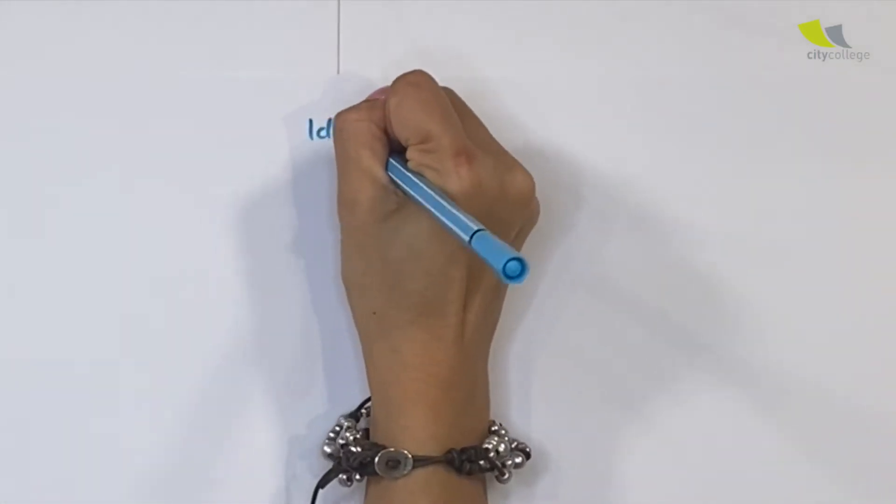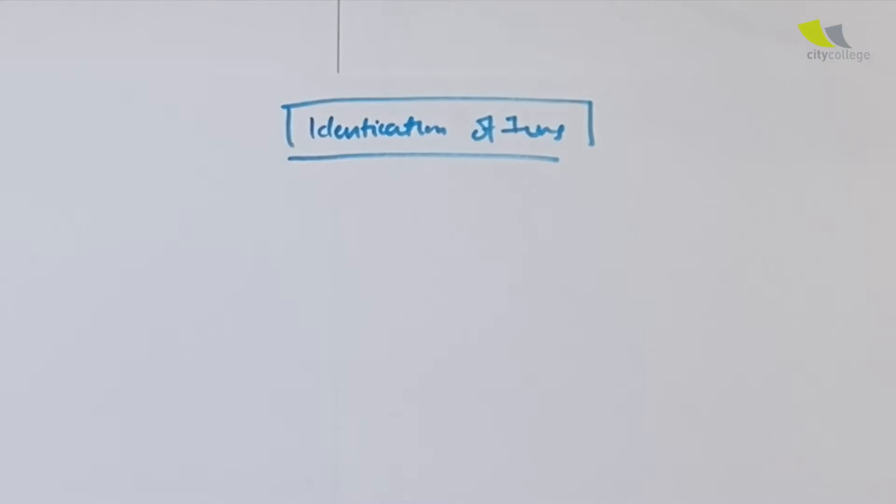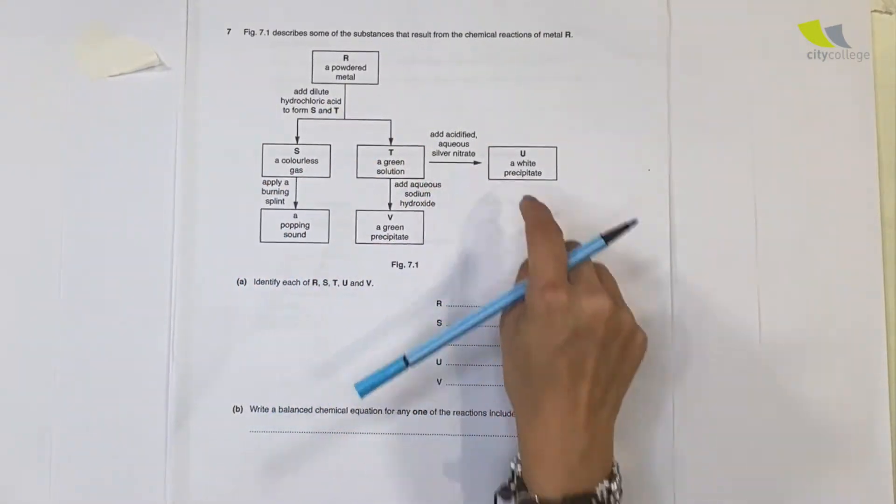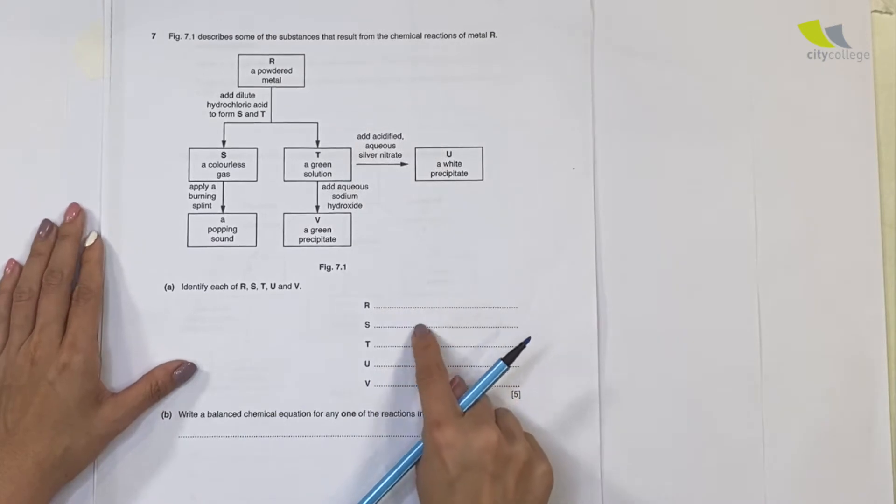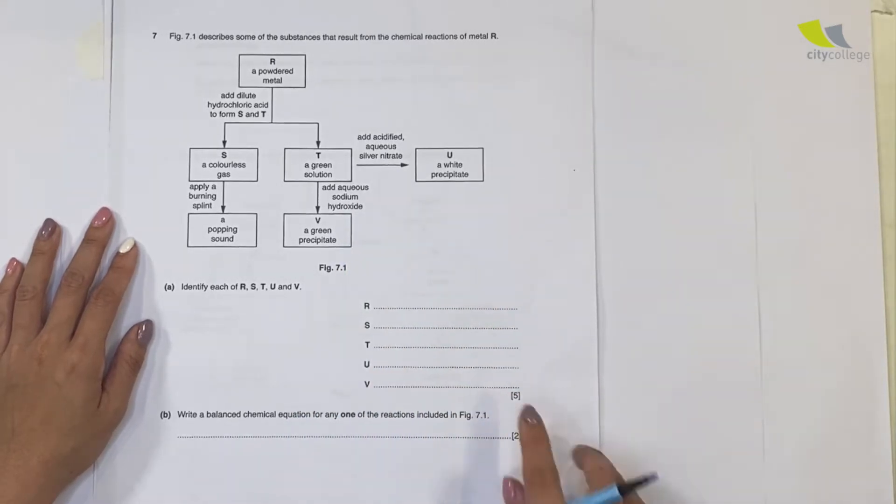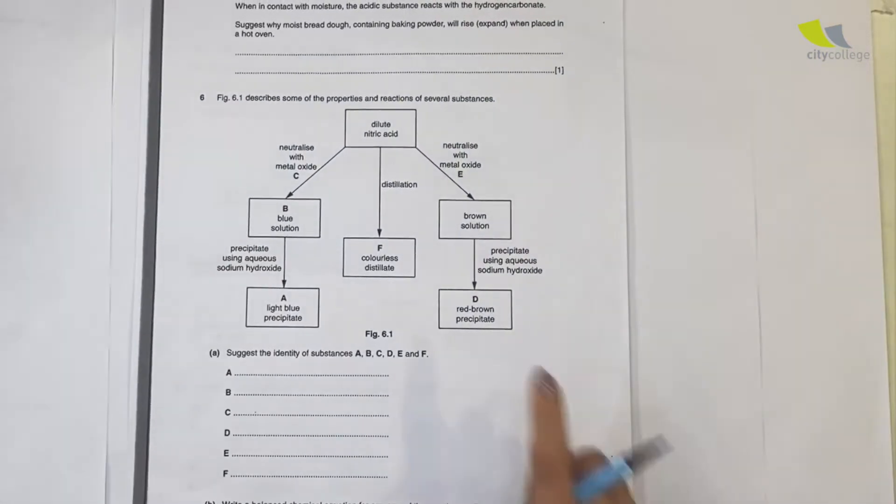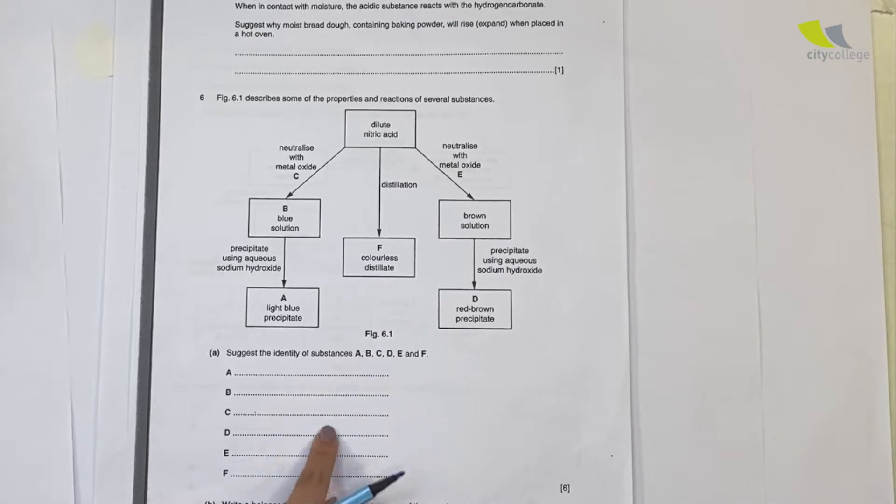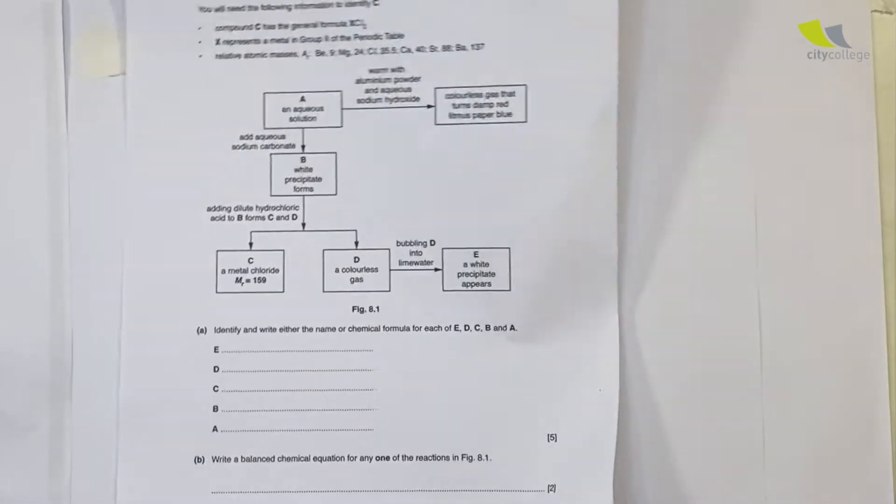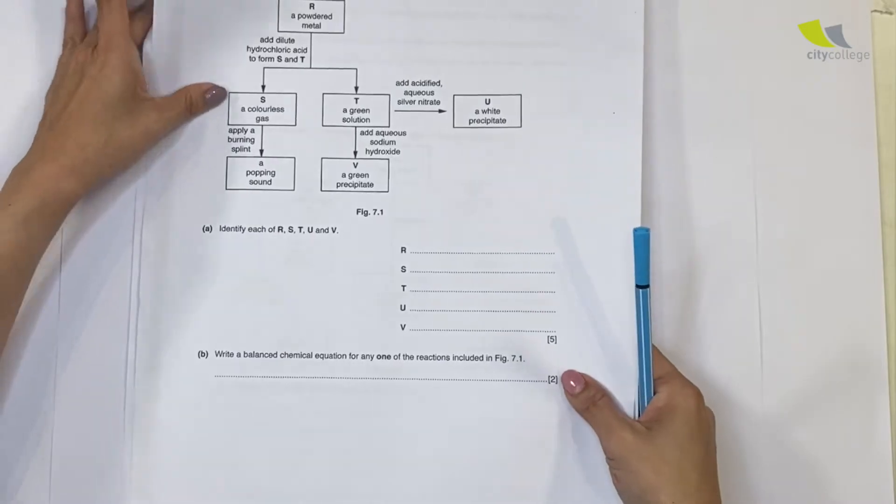Today I'm going to teach you identification of ions. What exactly is identification of ions kind of questions? It will look something like this, with lots of boxes. Your job is to solve the puzzle and write down the identity. And always, they will end off with, write a balanced chemical equation for any one of the reactions. They amount to 7 marks, sometimes even 8. These are the typical identification of ions kind of questions.